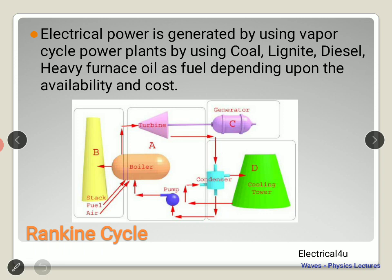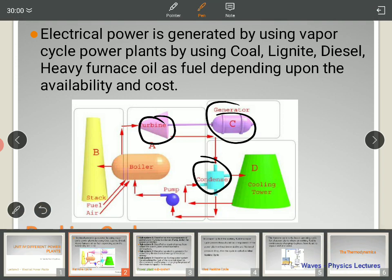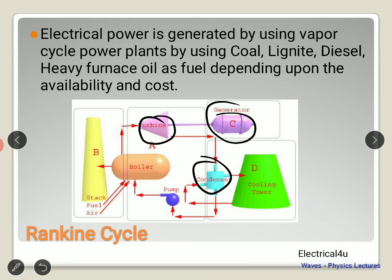Rankine cycle is something which resembles the Carnot cycle, and I'm going to explain the Carnot cycle as well. If you talk about the Rankine cycle, there are four parts to it. There is a turbine, a generator, a condenser, a pump, and a boiler. So the four things you need for the Rankine cycle are a turbine, a condenser, a pump, and a boiler.